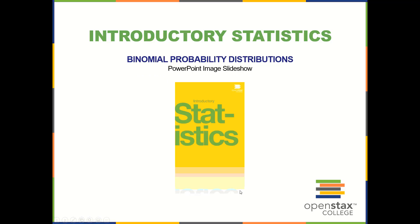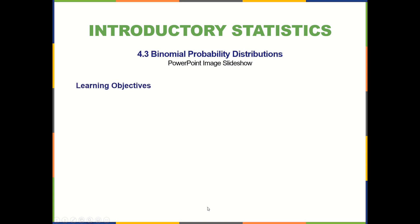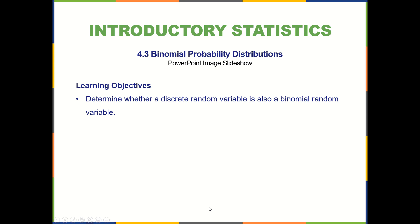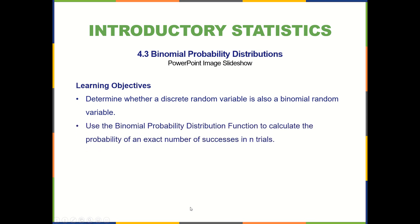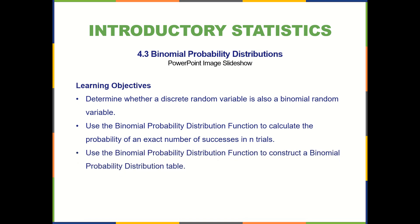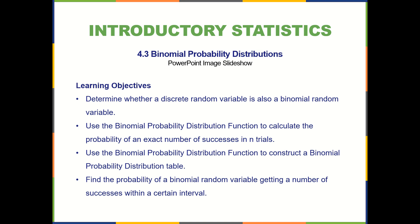We are ready to study binomial probability distributions. We'll cover determining whether a discrete random variable is also a binomial random variable, using the binomial probability distribution function to calculate the probability of an exact number of successes in n trials, constructing a binomial probability distribution table, and finding the probability within a certain interval.